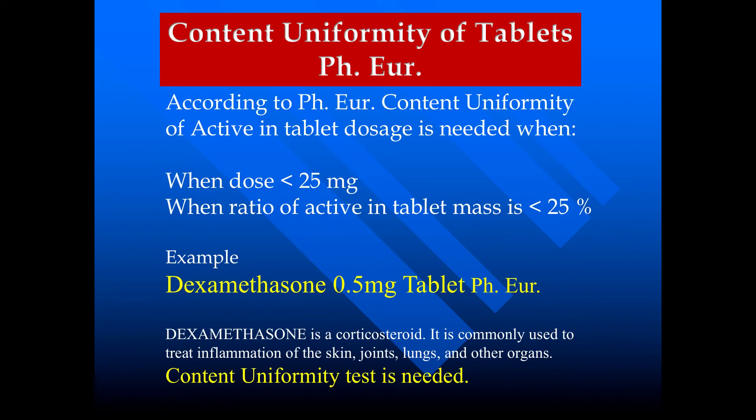When is the content uniformity test needed? According to the European Pharmacopoeia, content uniformity of active ingredient in tablet doses is needed when the dose is less than 25 mg, or when the ratio of active ingredient to tablet mass is less than 25%. An example is dexamethasone 0.5 mg tablet. Since the tablet contains only 500 mcg (0.5 mg) of active ingredient, the content uniformity test is needed here.